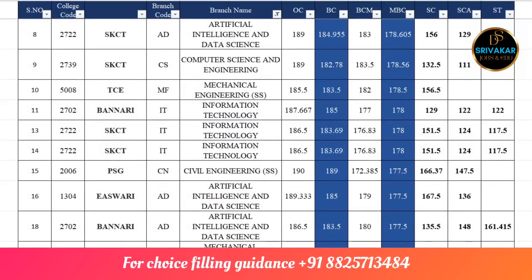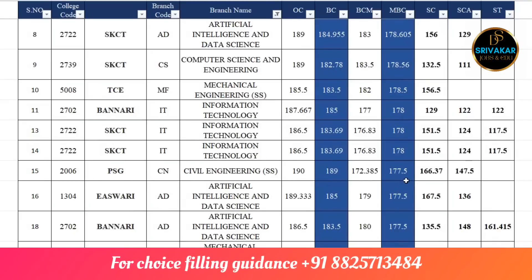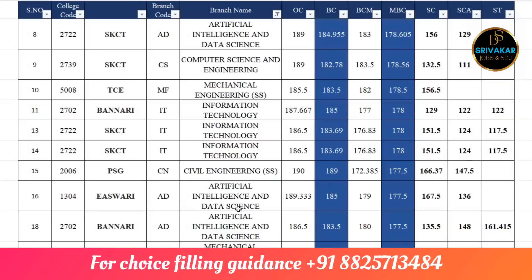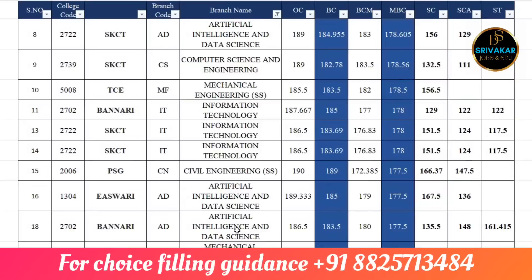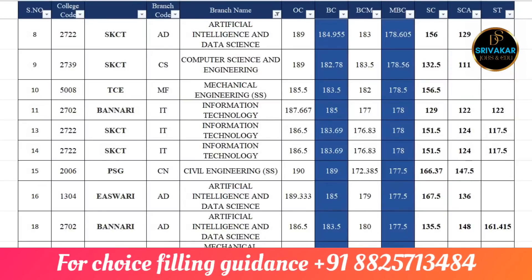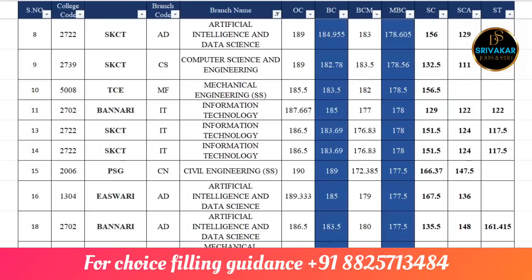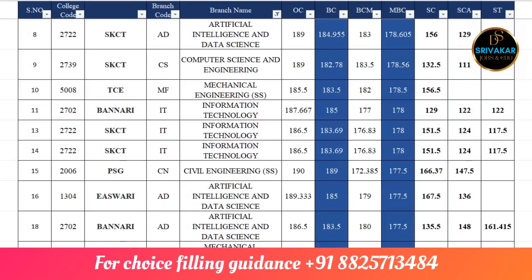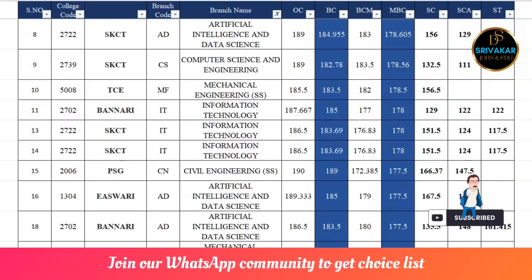Chagraja is 178.5. BANARIA is listed. AIT is 179.5. CAT Mechanical is 179.5 — Mechanical Engineering self-support 179.5 MBC. Kongu IT is 177.